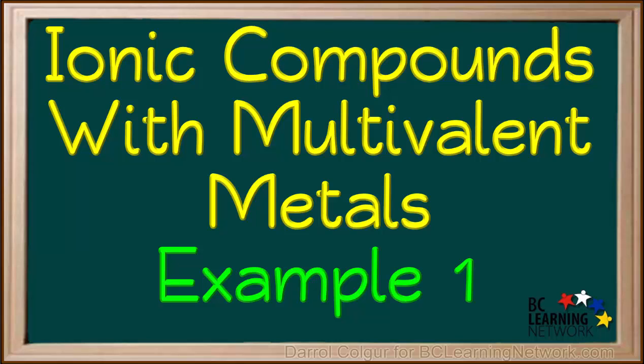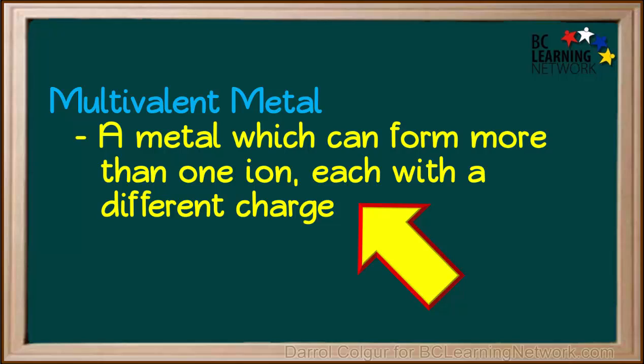In this example, we'll show you how to write the formula for an ionic compound with a multivalent metal. A multivalent metal is a metal which can form more than one ion. Each ion it forms has a different positive charge.